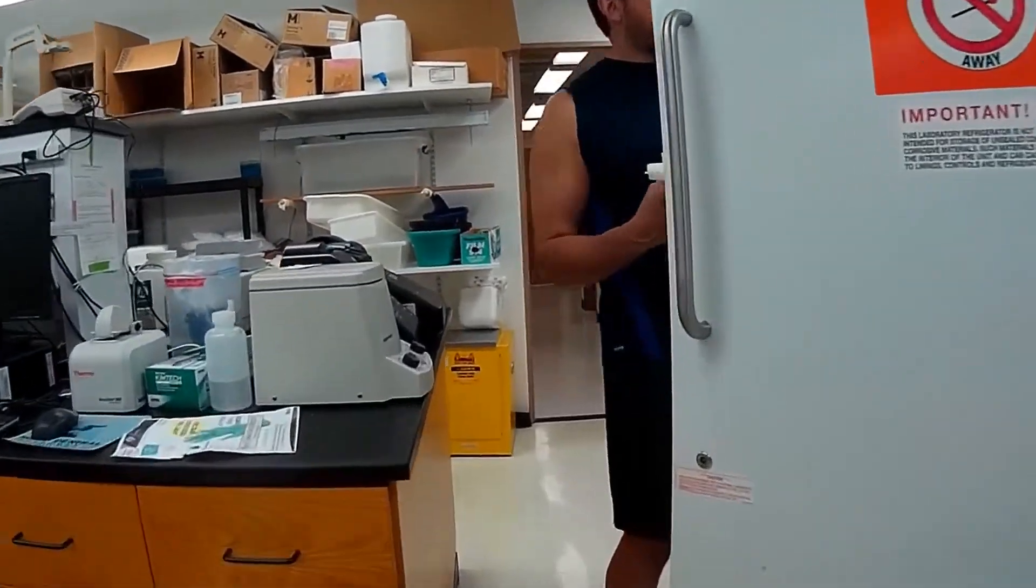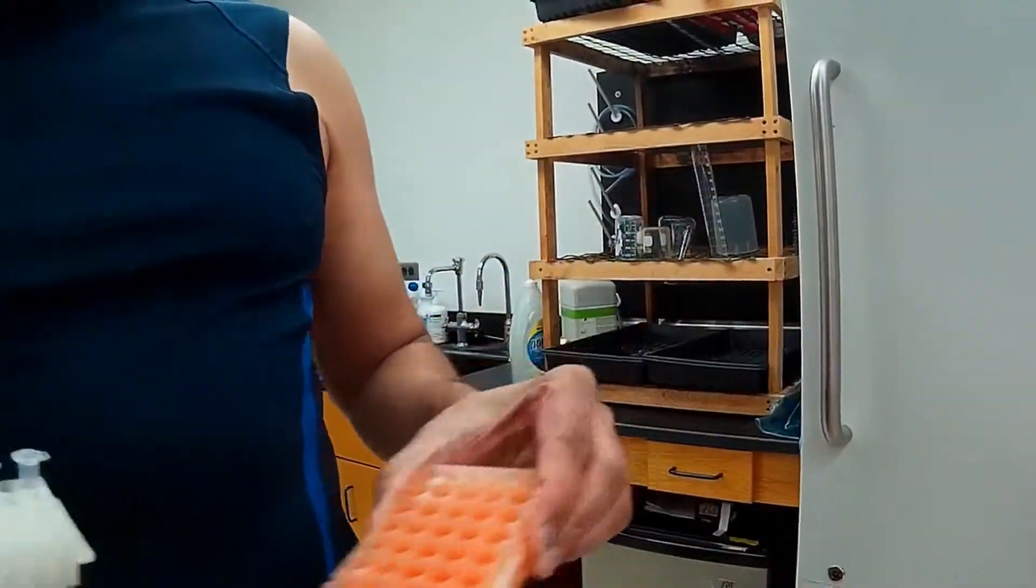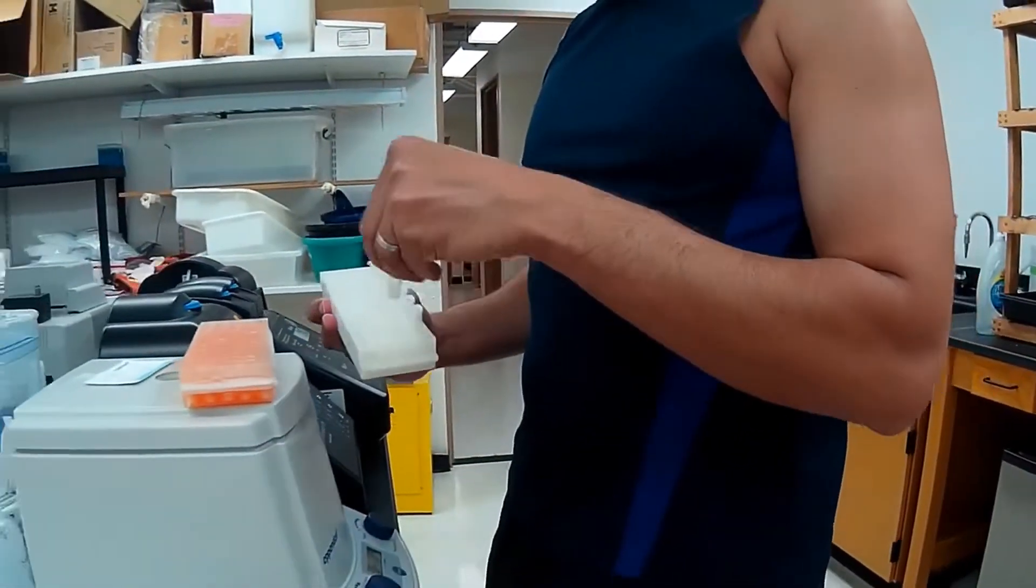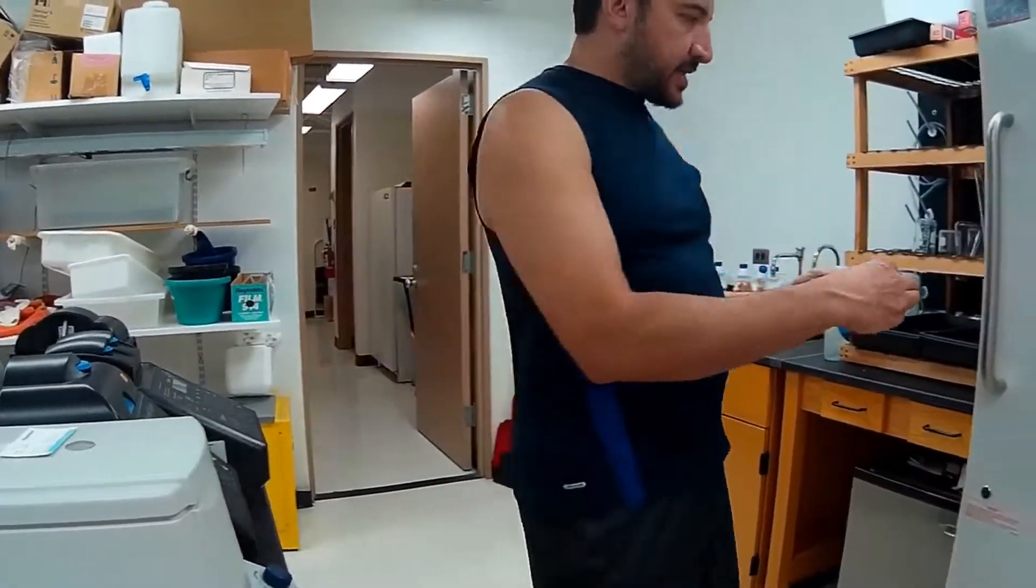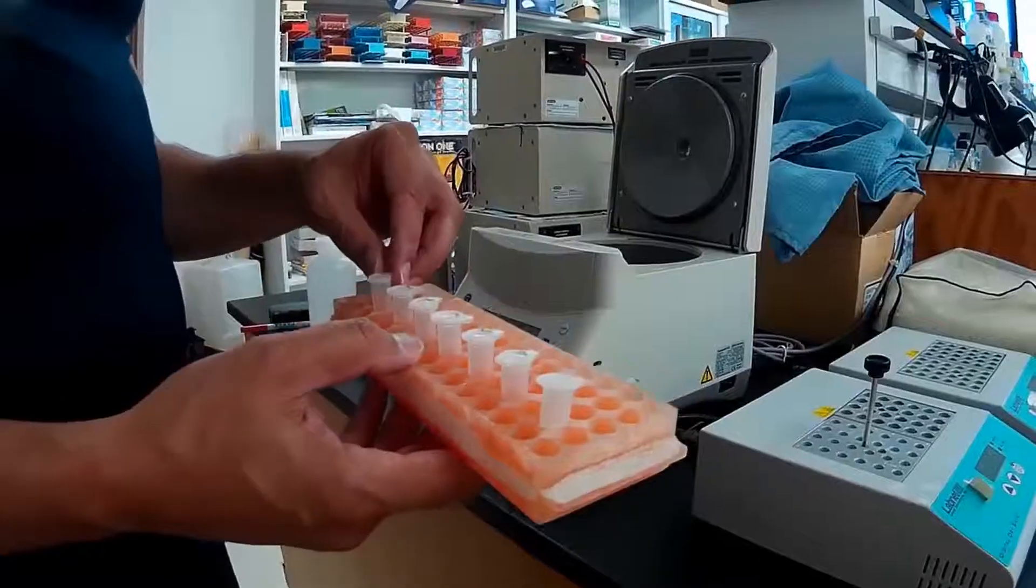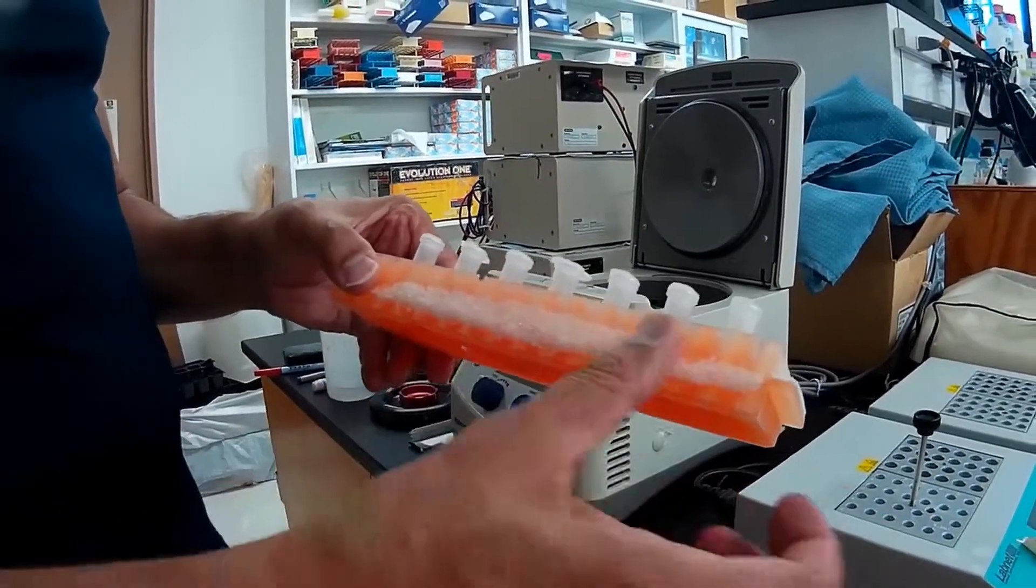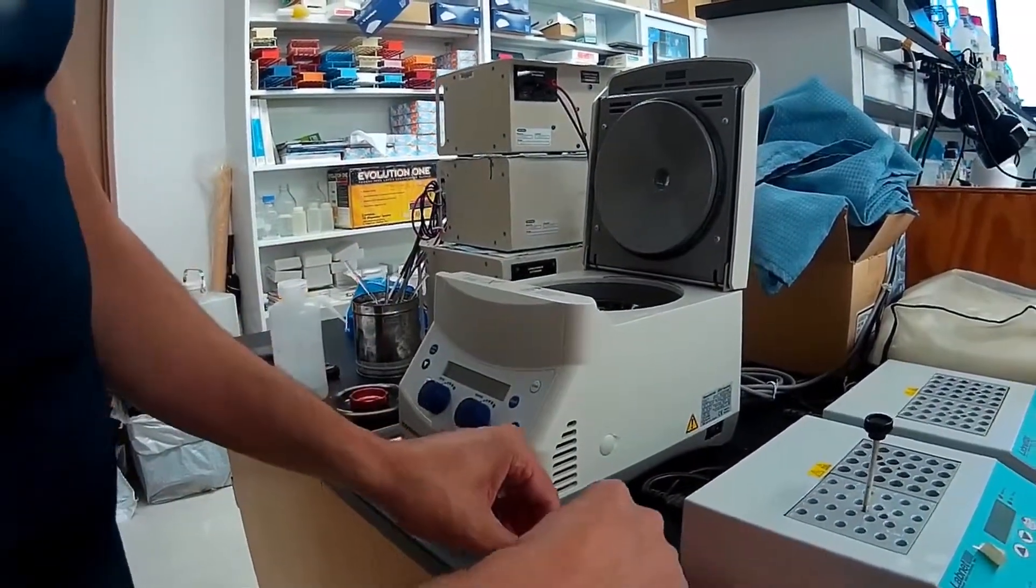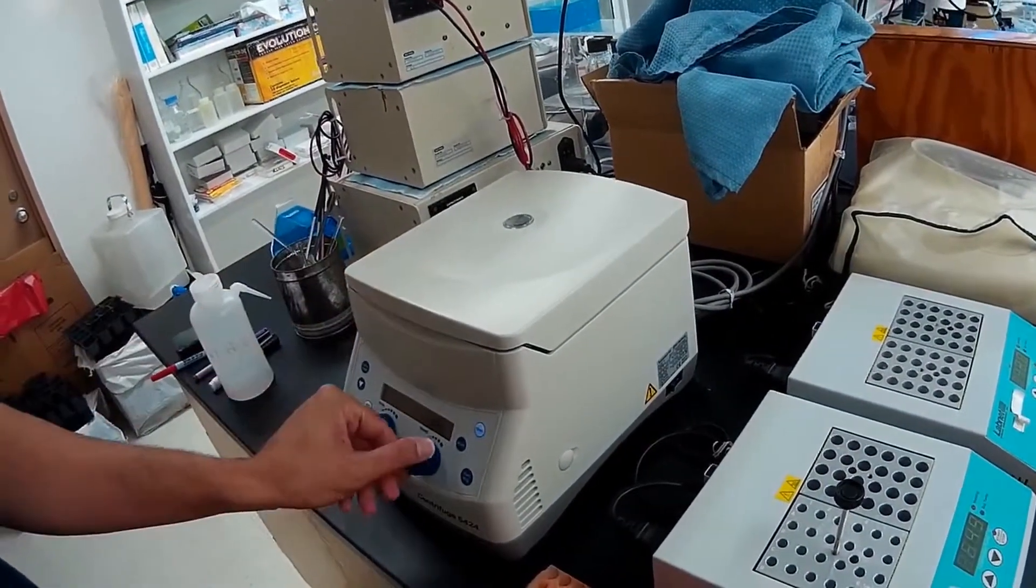Then the tubes will be put in an ice cold rack that is kept in the minus 20 freezer for one minute. This will further the precipitation reaction to get more of the protein and genomic DNA out of solution. Then the tubes will be spun at maximum speed for five minutes.